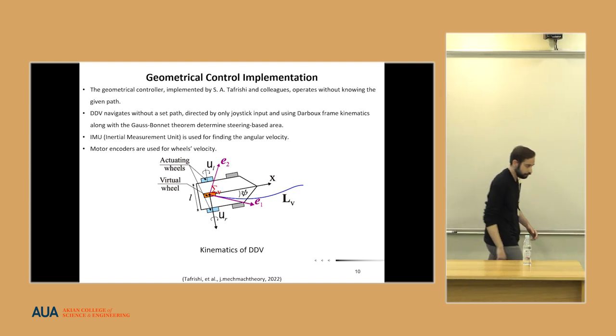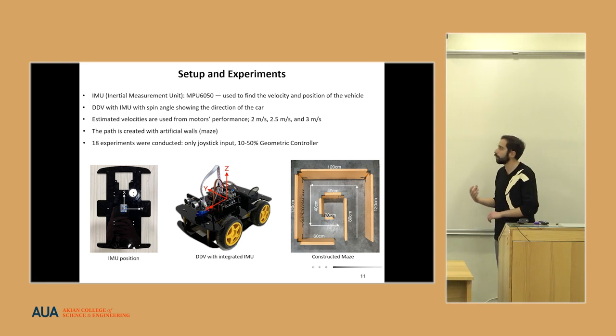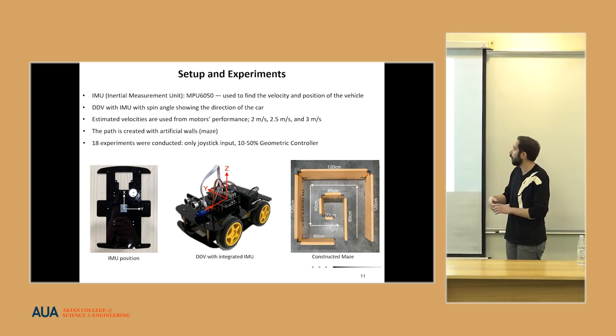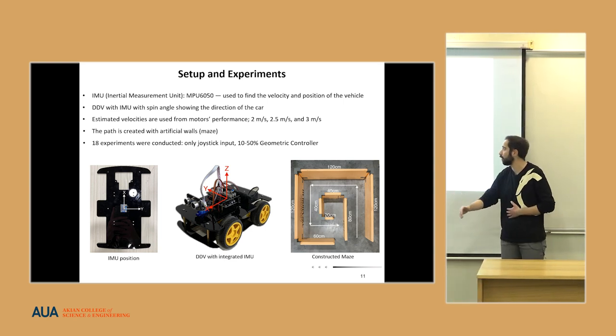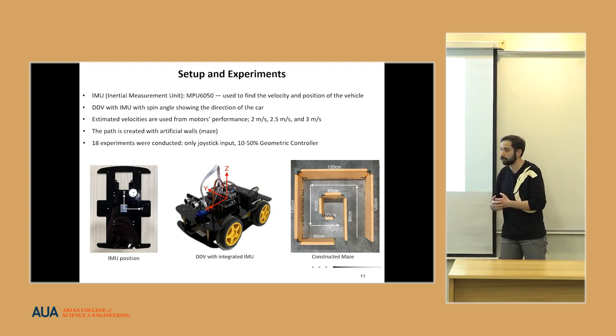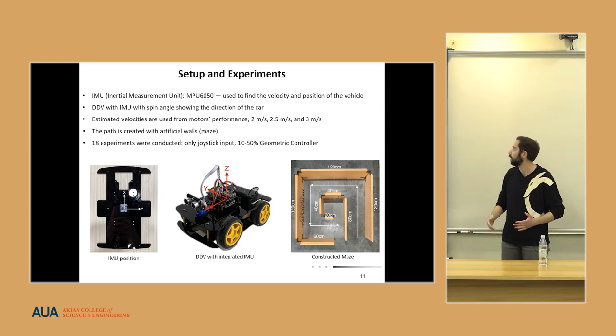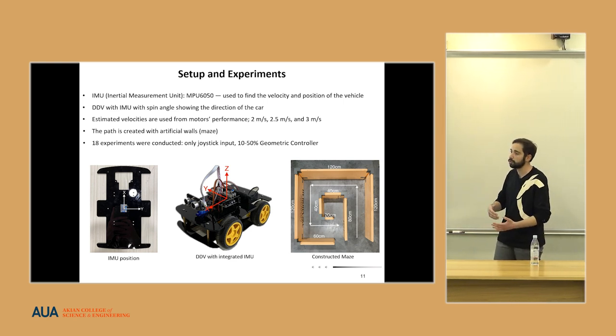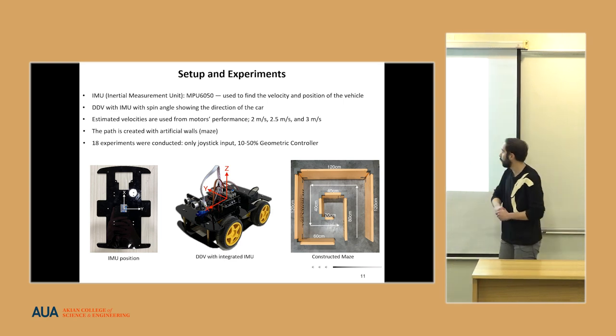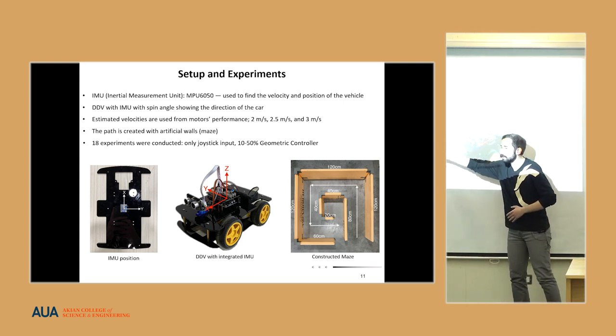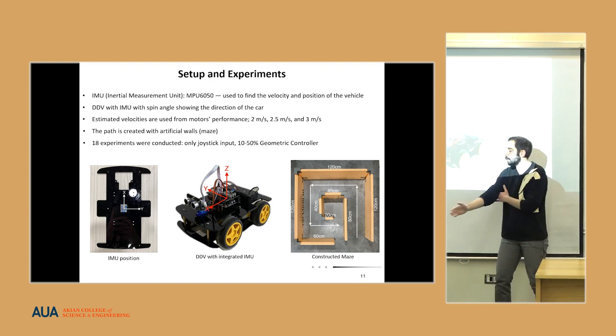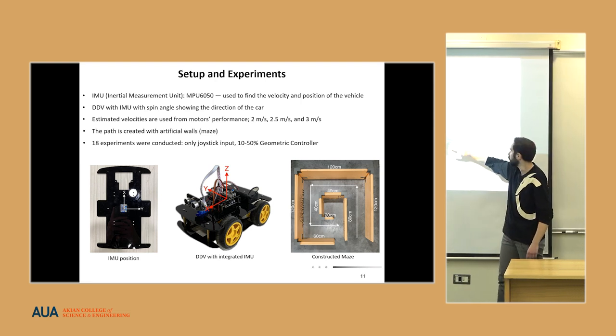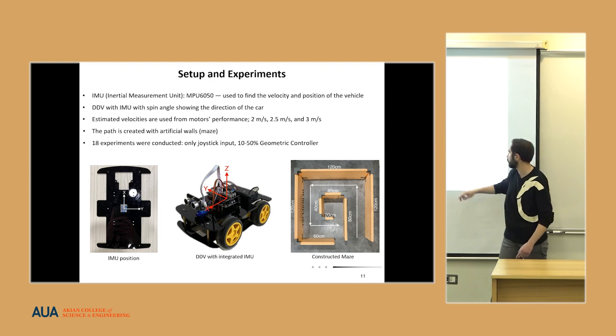Talking about our experiments, we also used the IMU for finding the spin angle of our car. At first, it was decided to use this sensor to find the velocity and position of our vehicle. However, as the velocity data came with large errors, it was decided to estimate these values. Here we can see that the IMU is positioned at the center of our vehicle. By changing the direction, the x and y axes stay standard, and the spin angle was calculated along the z-axis.